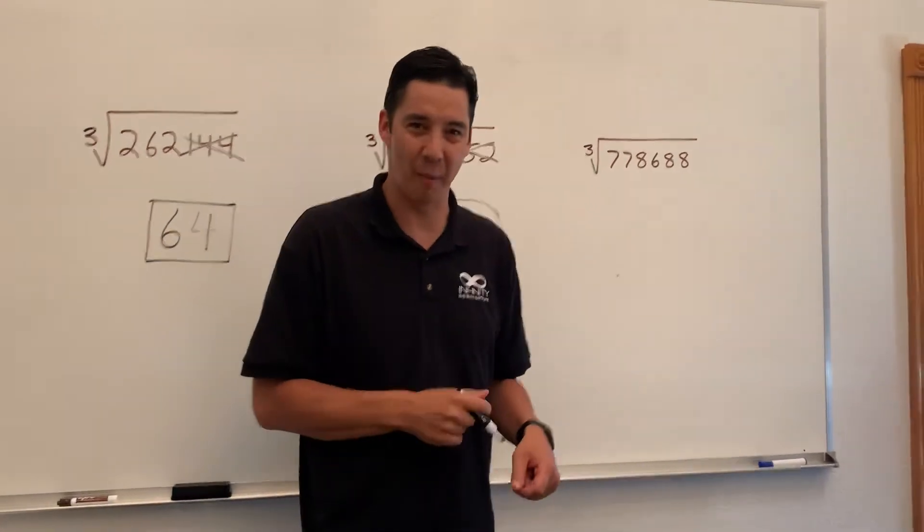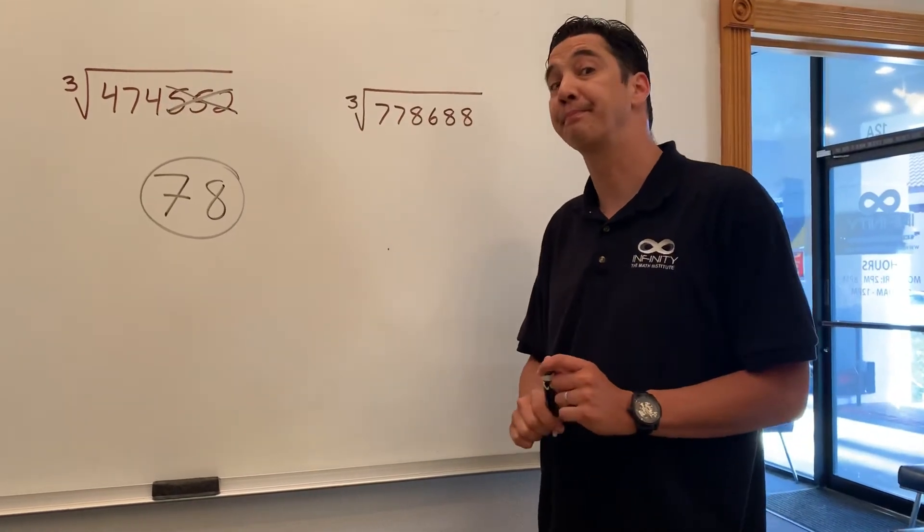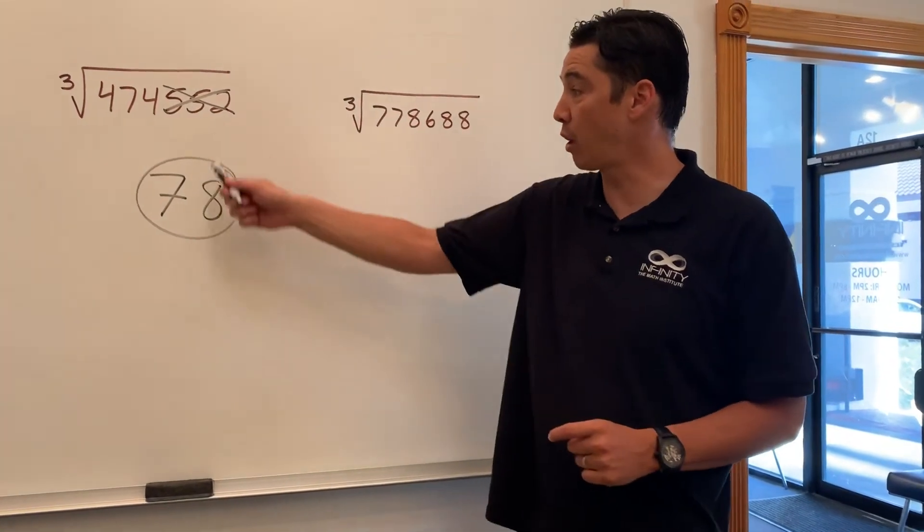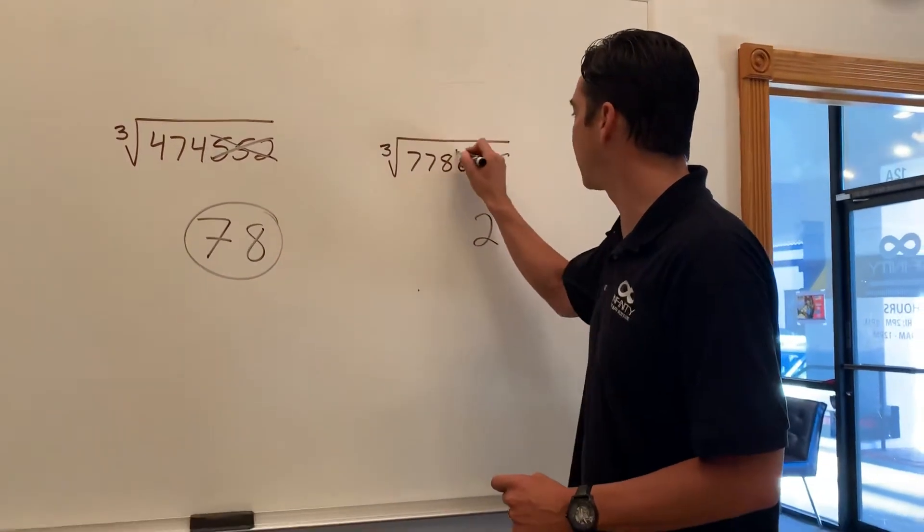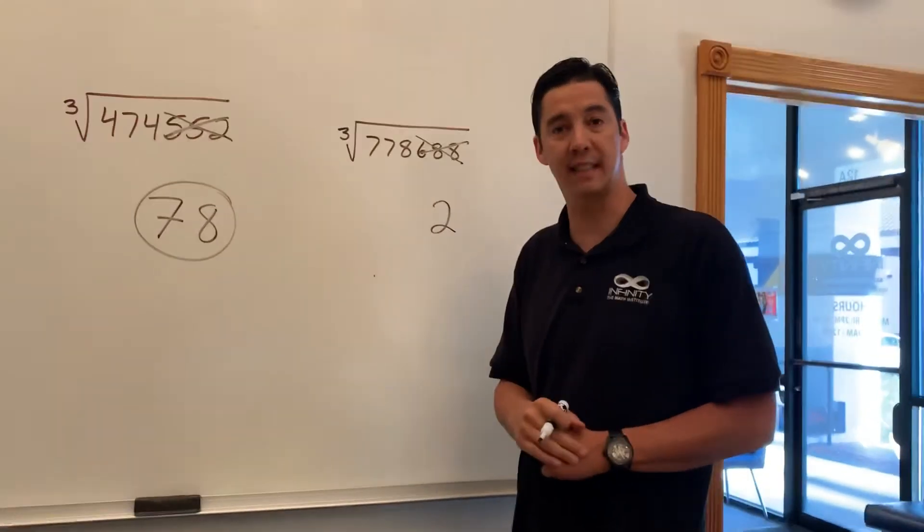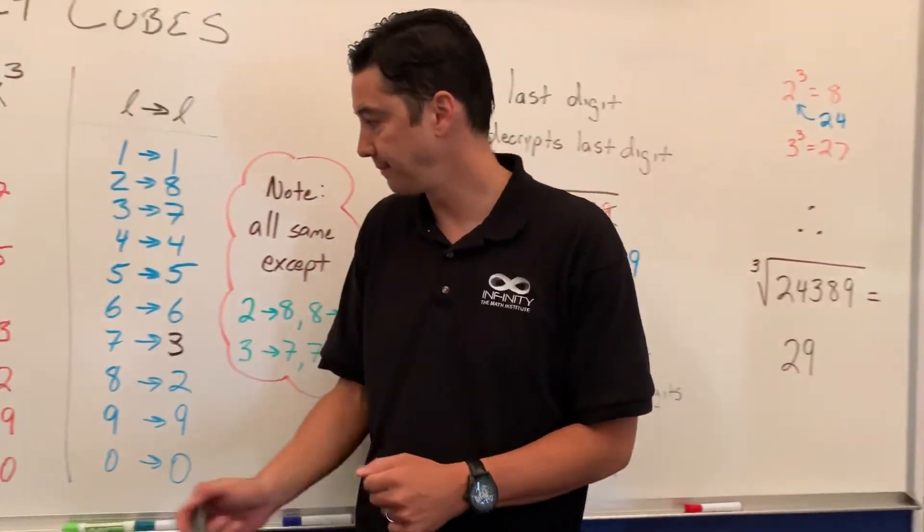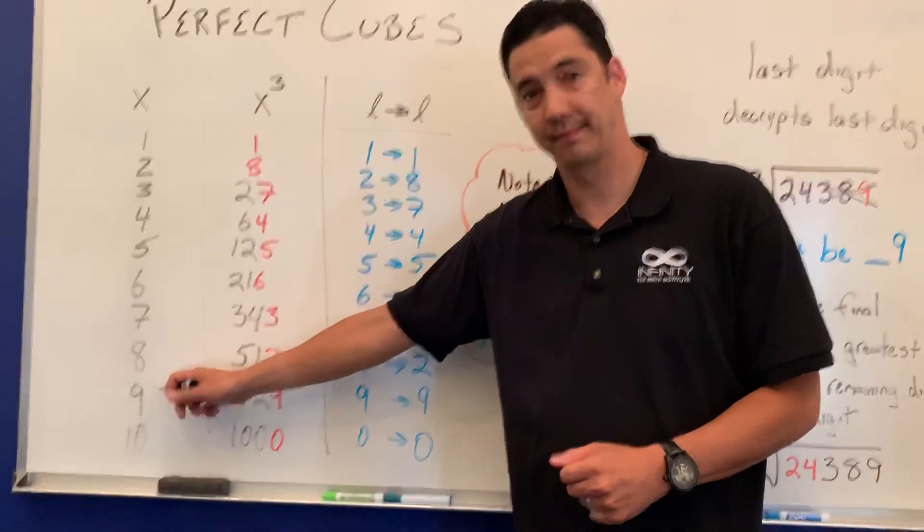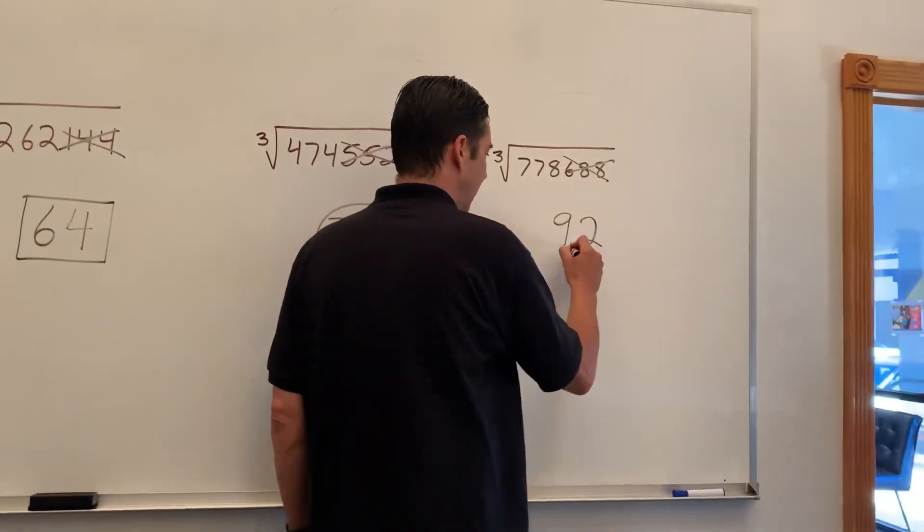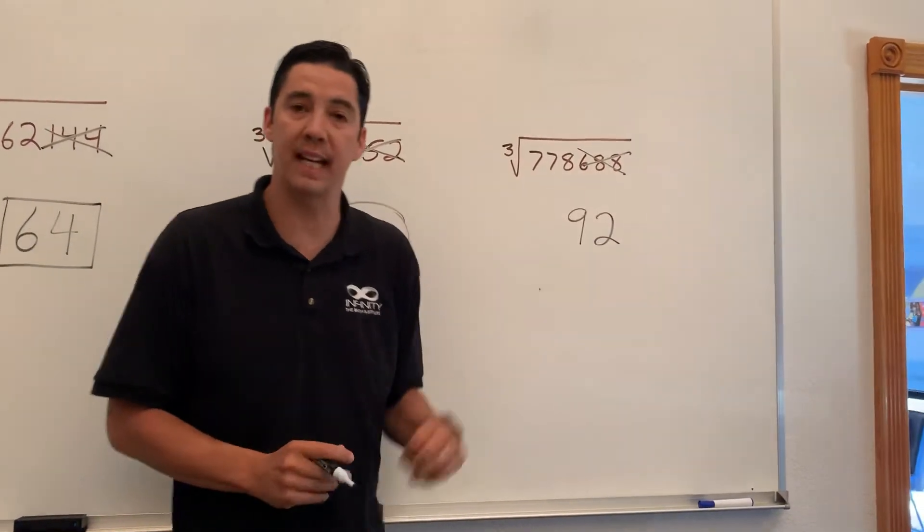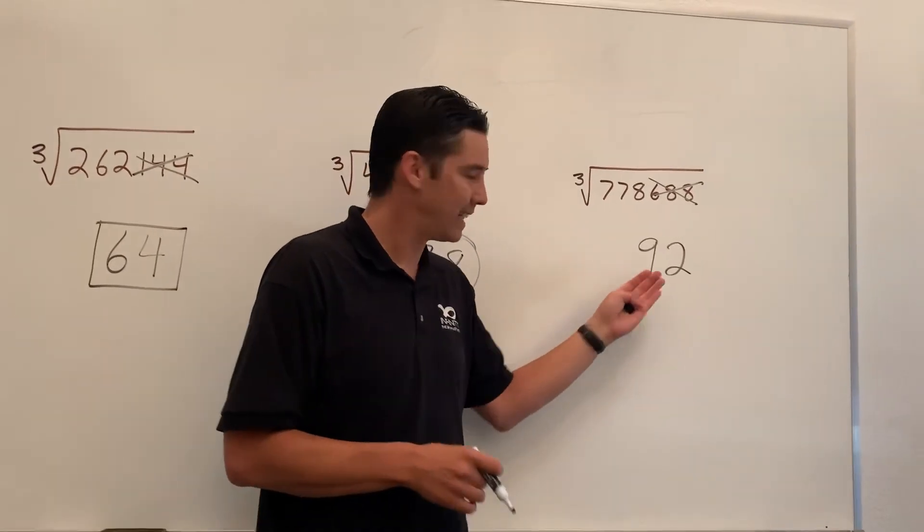Your turn to try at home, alright? What number goes with the final 8? The 2 goes with the 8 and the 8 goes with the 2. Let's eliminate these 3 numbers. What is the greatest cube less than 778? 9. So 92 cubed is equal to 778,688, or the cube root of 778,688 is 92.